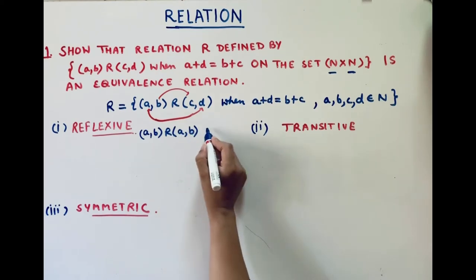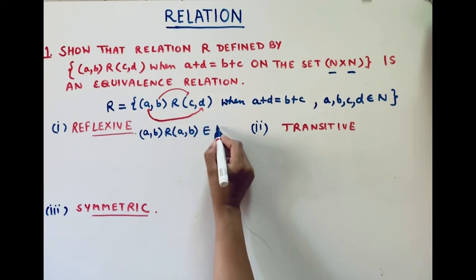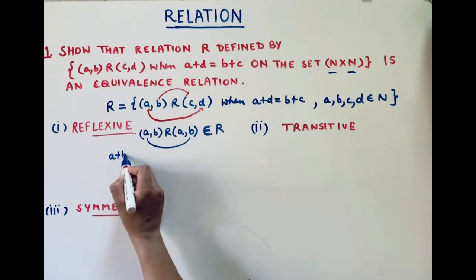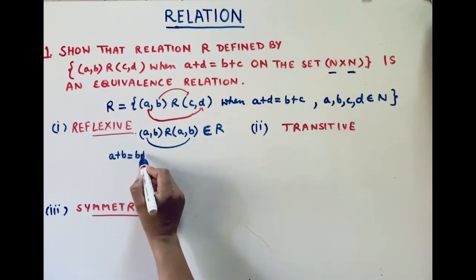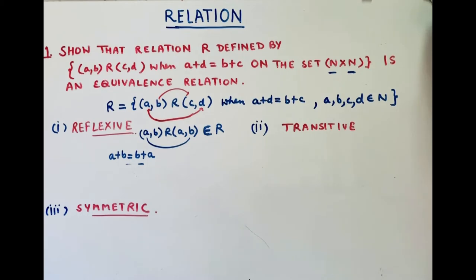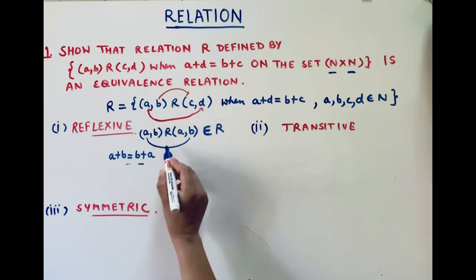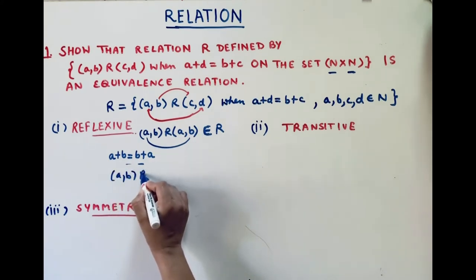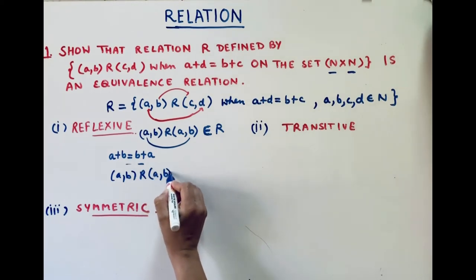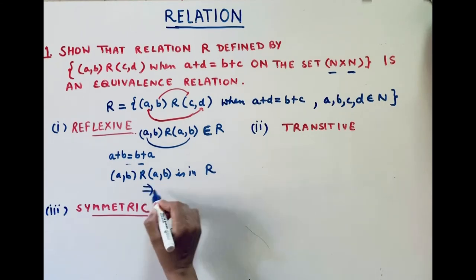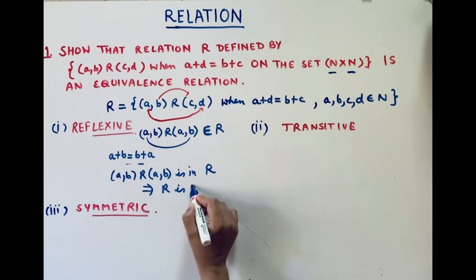For reflexive, if (a,b) belongs to N×N, we check whether (a,b) R (a,b). This requires a plus b equals b plus a. You know that the sum of two numbers is commutative, so this is true. Therefore (a,b) R (a,b) is in R, which implies that R is reflexive.